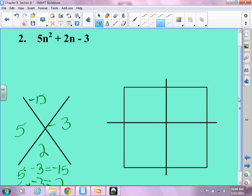So I'm going to put my answer in, and it was 5n squared, 2n, and negative 3. I'm going to put 5n here, and I'm going to put negative 3n here. And again, those can be flip-flopped. They don't have to be there.